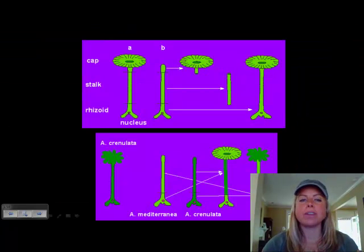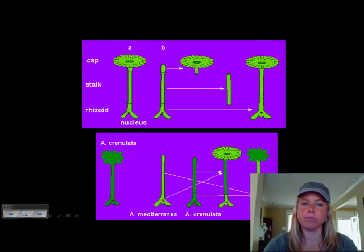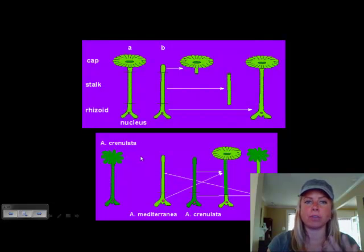This is the Hammerling experiment, and what this is showing is how they proved that DNA was in the nucleus. So what they did was they actually had these two types of algae that were unicellular algae, and you can see they each have kind of a root area, a stalk, and a cap.